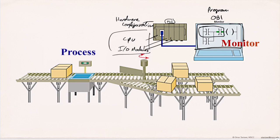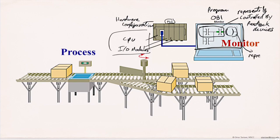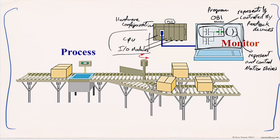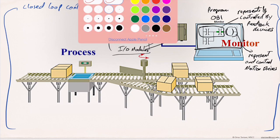The program will contain input instructions, which represent and are controlled by feedback input devices such as sensors. Output instructions represent and control motion drives or outputs such as solenoids, lights, and contactors. Now to program a PLC and monitor its program, we need to understand the closed-loop control system and the machine sequential process.